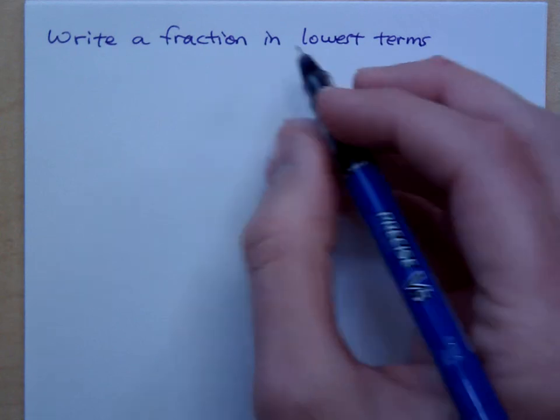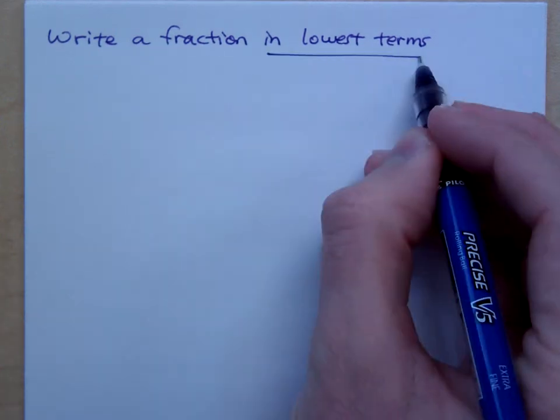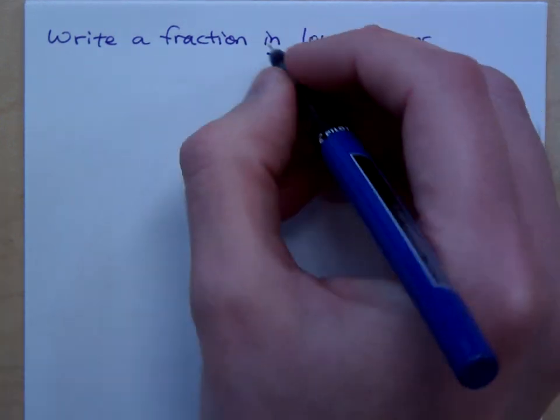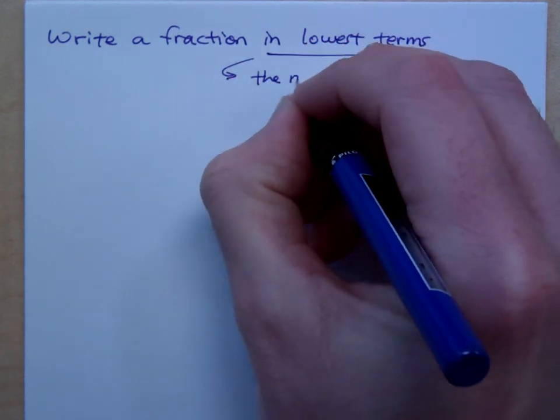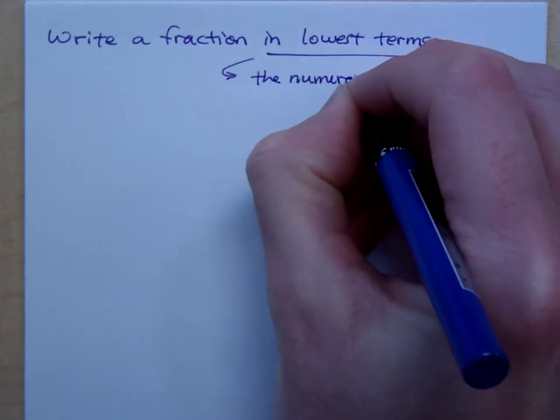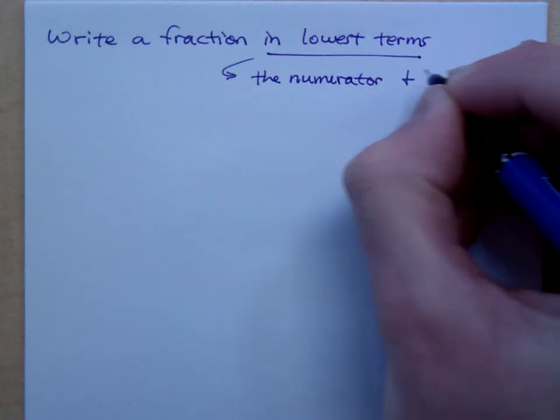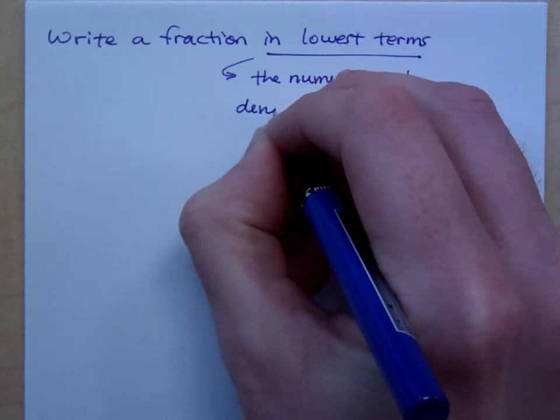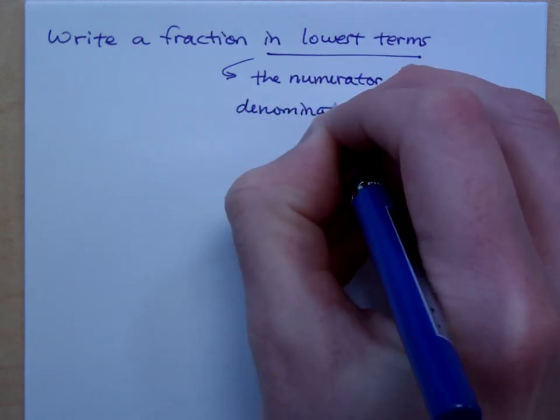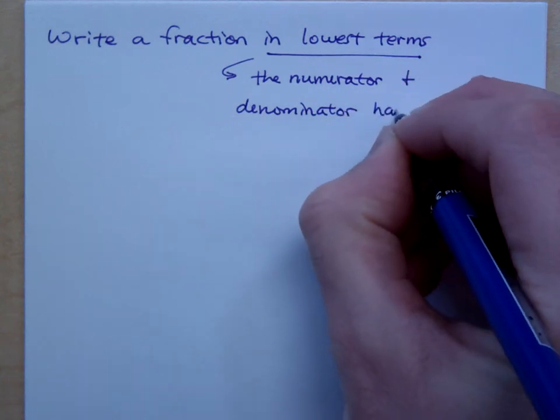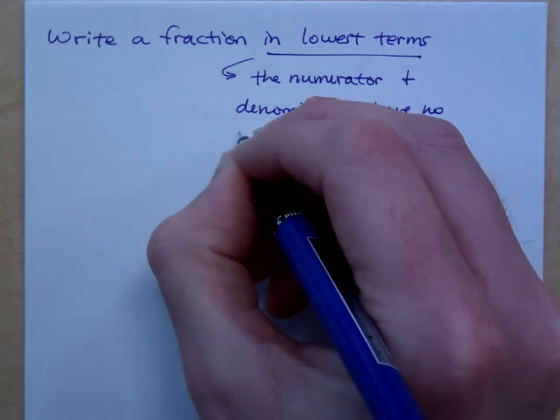You need to understand what this phrase means. When we talk about in lowest terms, we're talking about where the numerator and denominator have no common factors.